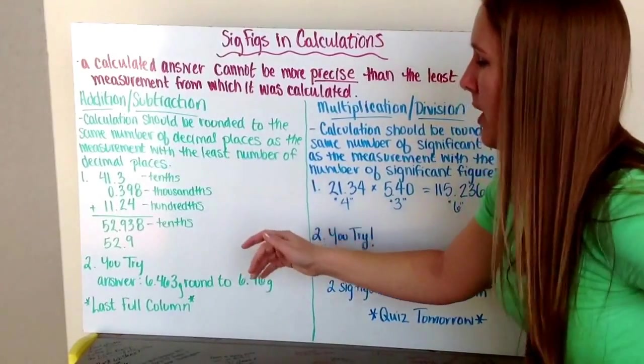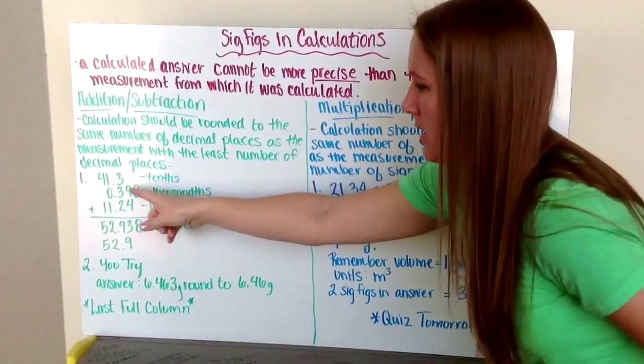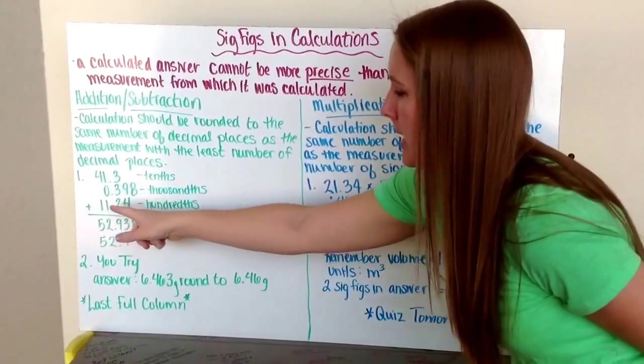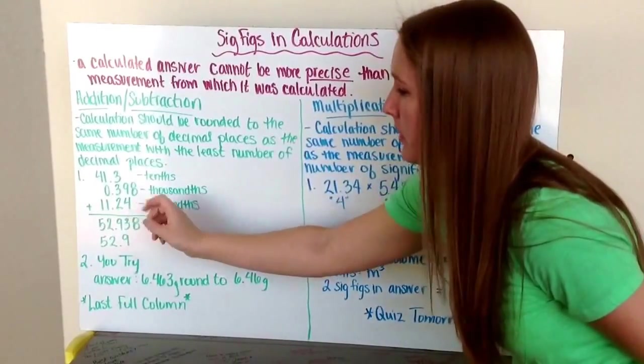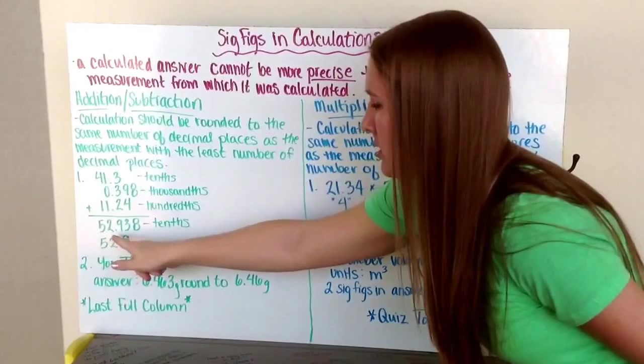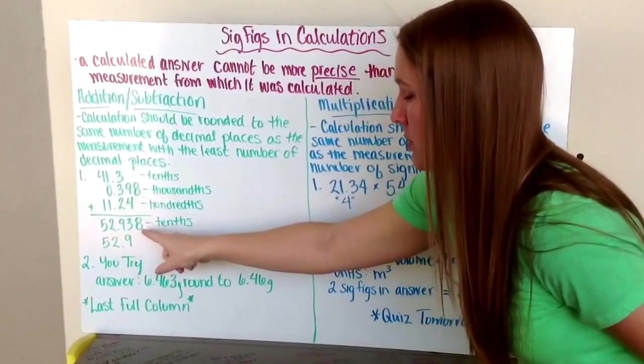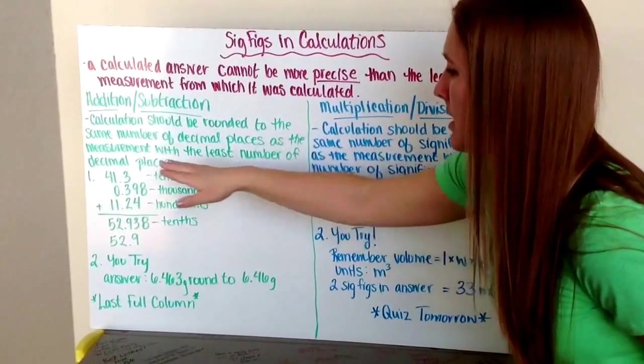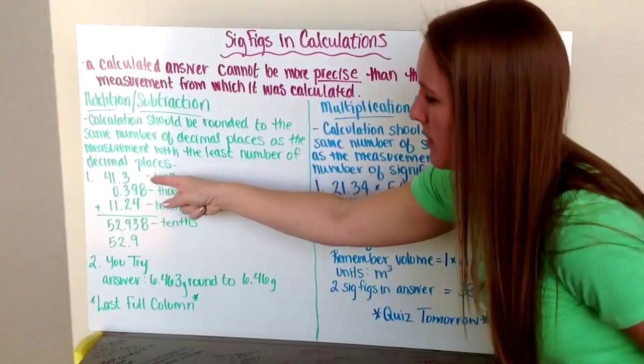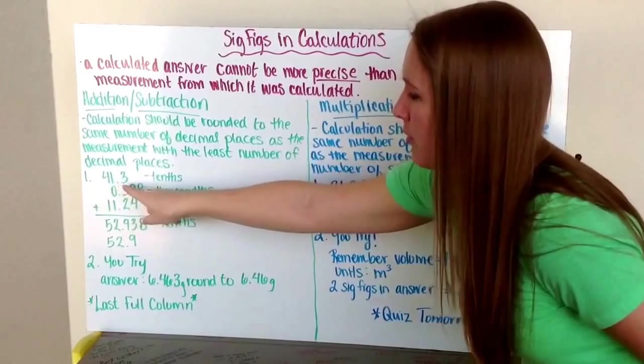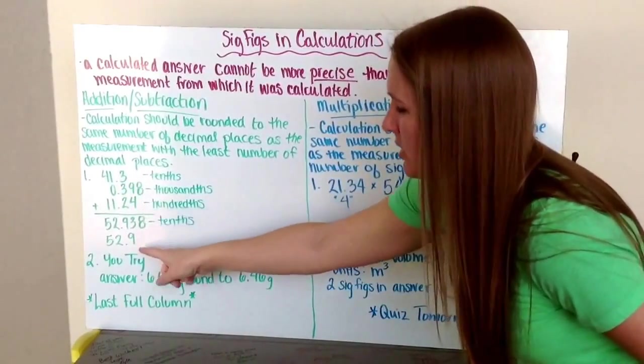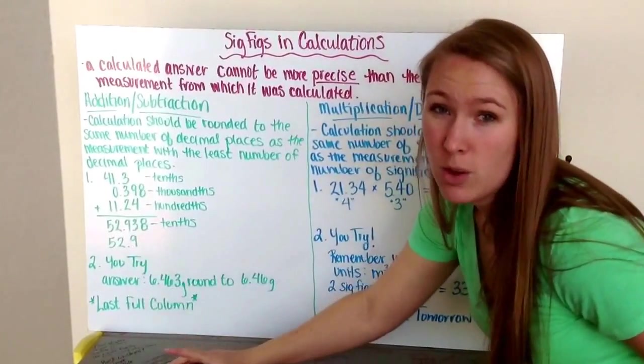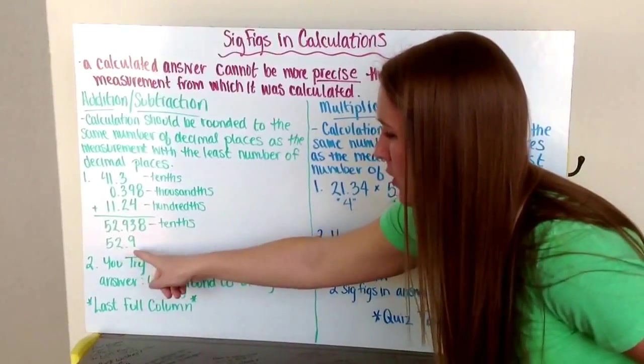For addition and subtraction, calculations should be rounded to the same number of decimal places as the measurement with the least number of decimal places. We have our example problem here. I have 41.3, this is significant to the tenths place. The number 0.398, significant to the thousandths place. And 11.24, which is significant to the hundredths place. When I add them all up, I get 52.938. I can only record my answer with the least number of decimal places. My 41.3 only goes to the tenths place. Therefore I need to round my final answer to the tenths place. The number after the tenths place is 3, lower than 5, so I round down. So I have 52.9 as my final answer.